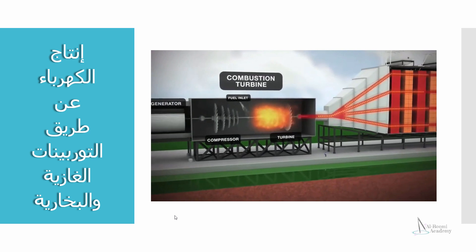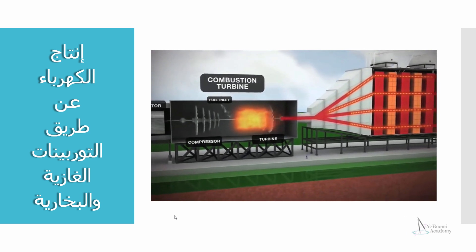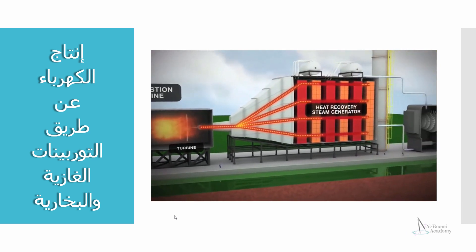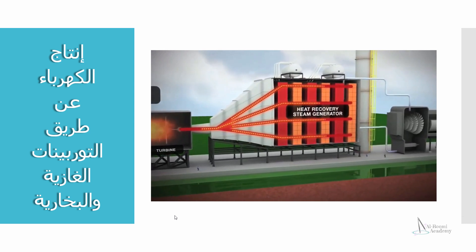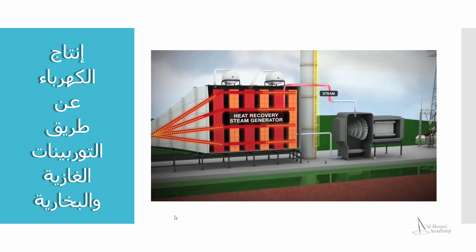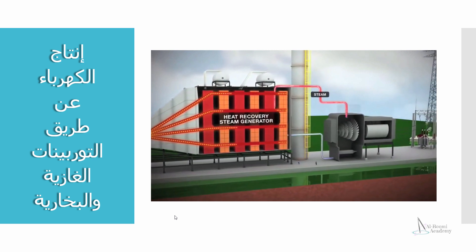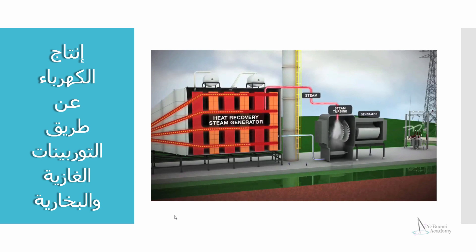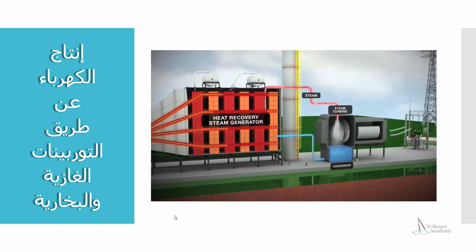Hot exhaust, normally lost during this process, is captured and routed through the two heat recovery steam generators. These units boil water to create steam, which spins an additional turbine generator and produces more electricity. Finally, the steam is discharged into a condenser, which returns the steam to its liquid state for recycling.